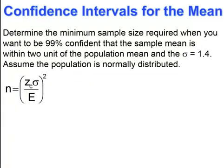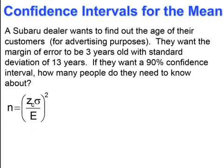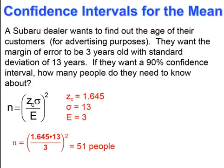Pause and try. The critical value is ±2.575, the standard deviation is 1.4, and the margin of error is 2. Plugging into the formula and squaring gives a sample size of 4. Pause and try. The critical value is ±1.645, the standard deviation is 13, and the margin of error is 3. Plugging into the formula gives a sample size of 51 people.